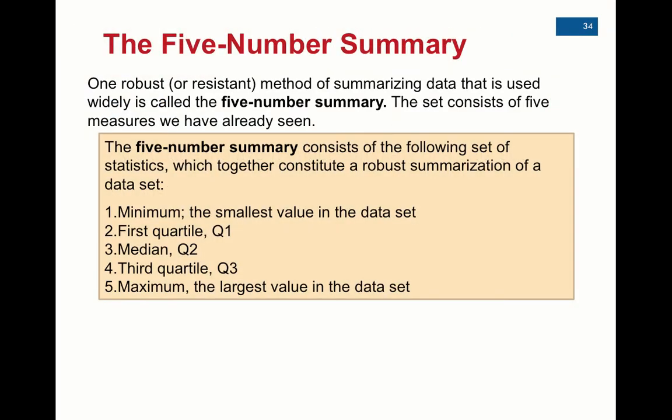So the 5-Number Summary, once again, is on the bottom of our 1-VarStat list. It's the minimum, Q1, the first quartile, the median, third quartile, and the maximum.